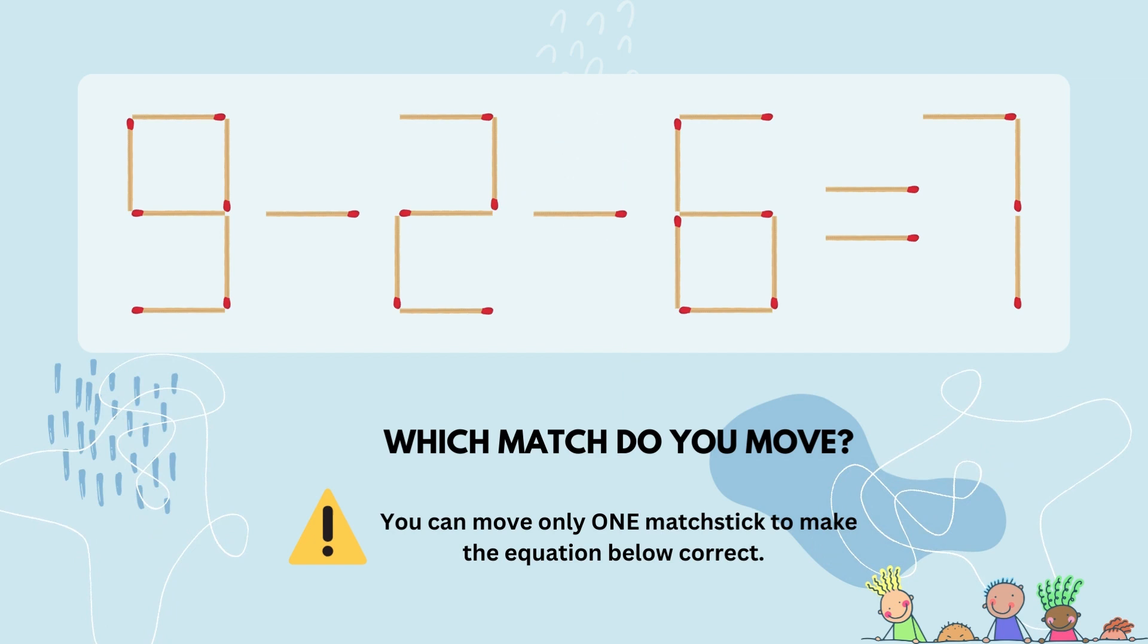Guess what? There's two possible answers to this riddle. The first possibility is to take the middle matchstick from the six and make it a zero. You'll be left with nine minus two minus zero, which equals seven.